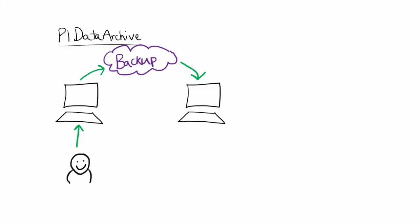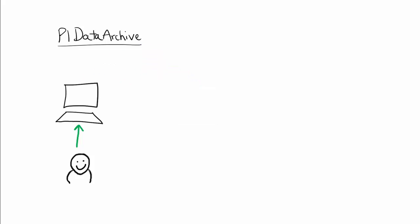Let's take a look in more detail at what this entails. In my PI Data Archive, I have several components that are important and custom to my configuration. For instance, I have my PI Data Archive installation directory itself, which holds all the configuration information for my system. I also have a directory of my archive files, which is where my time series data is stored. Finally, I have my client directories, including the configuration of interfaces that are installed locally on my PI Data Archive.